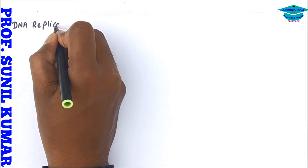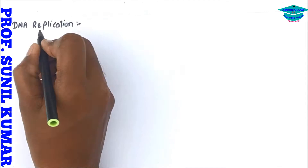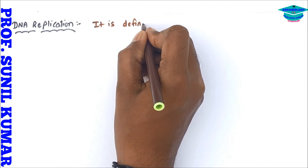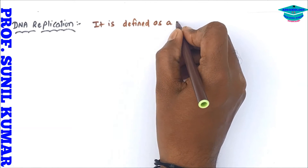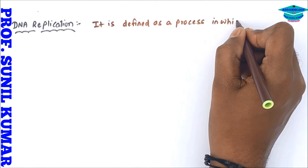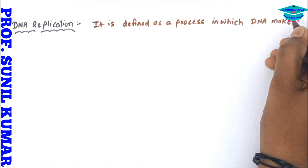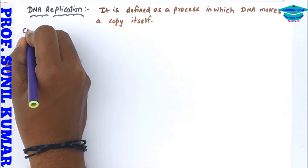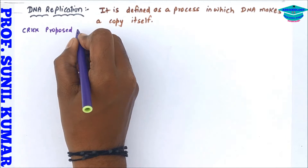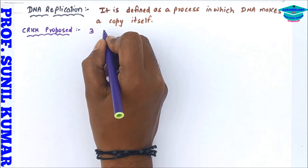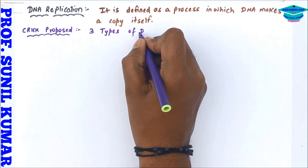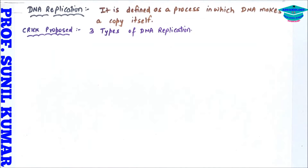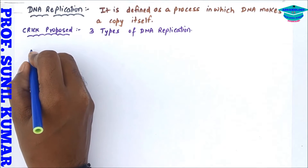In this video we are going to discuss DNA replication. DNA replication is defined as a process in which a DNA makes a copy of itself. DNA has the potential to make a copy of itself, therefore it is called autocatalysis. From DNA to DNA is autocatalysis, and from DNA to RNA is heterocatalysis.